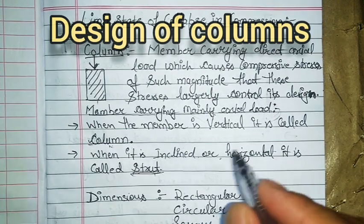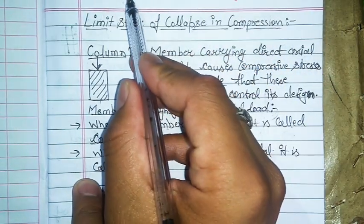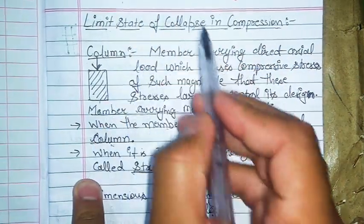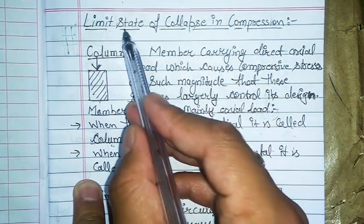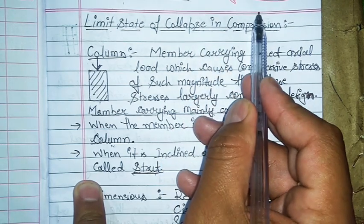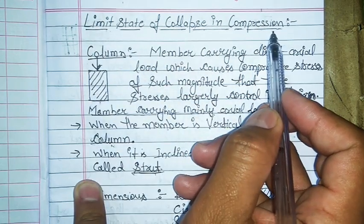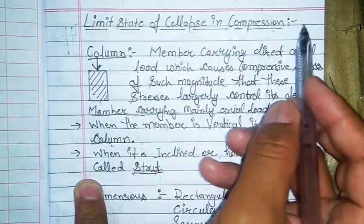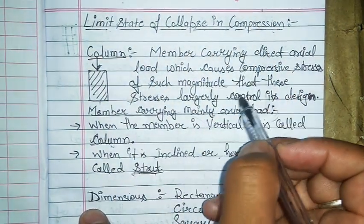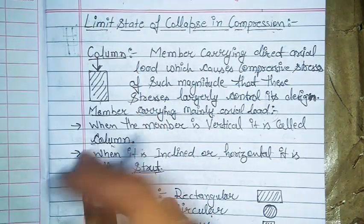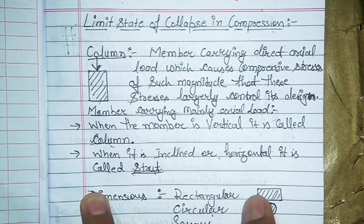Hello everyone. In today's lecture we are going to discuss columns. Columns are compression members; they come under the limit state of collapse in compression. While designing, we take into account the limit state of collapse in compression because we are designing columns as per the limit state method. We have two types of limits: limit state of collapse and limit state of serviceability.